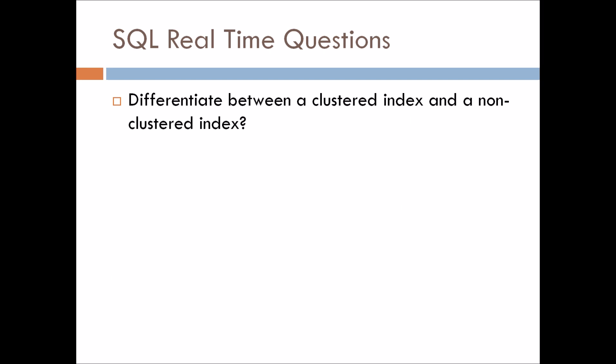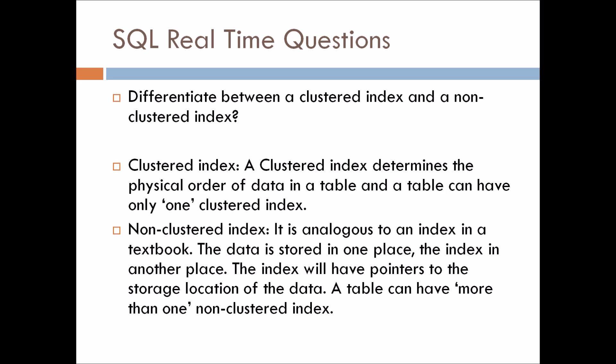Differentiate between a clustered index and a non-clustered index. A clustered index determines the physical order of the data in a table, and a table can have only one clustered index. Basically, whenever we create a primary key, the clustered index is automatically generated for that column. A non-clustered index is analogous to an index in a textbook — the data is stored in one place and the index in another, with pointers to the storage location of the data. A table can have more than one non-clustered index.